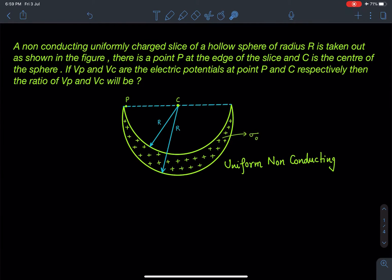This is the statement of this problem. We can see here one slice has been taken out of this hollow sphere. C is the center of it and point P is the point at the edge. So we have to find this Vp by Vc ratio in this case. Let's discuss.